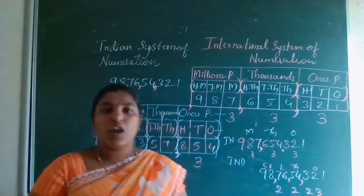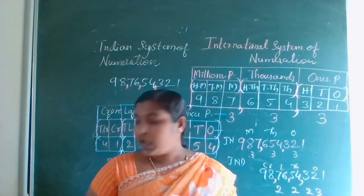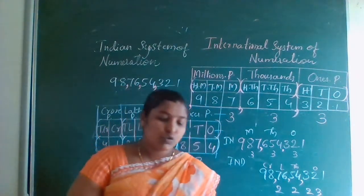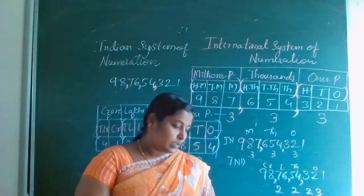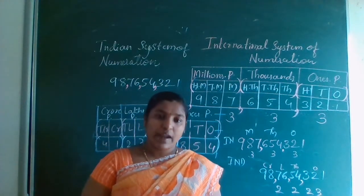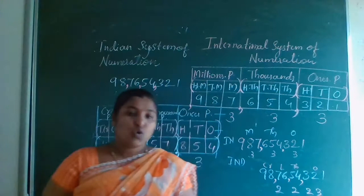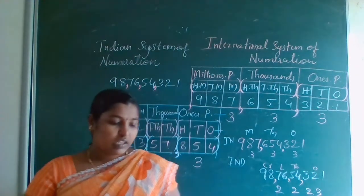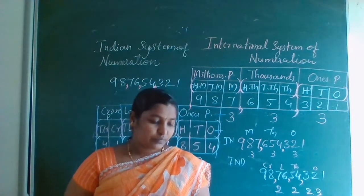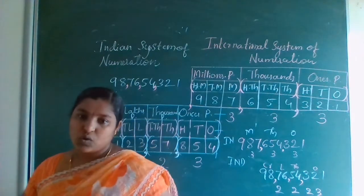This is the Indian and International System of Numeration — numeration is about how to read numbers and how to give commas. I hope you understood. Write Practice 1.5 in your fair notebook and tomorrow we will continue with the next thing: writing the expanded form and place values. They have given about both Indian and International System of Numeration — go through this and understand it. Thank you.